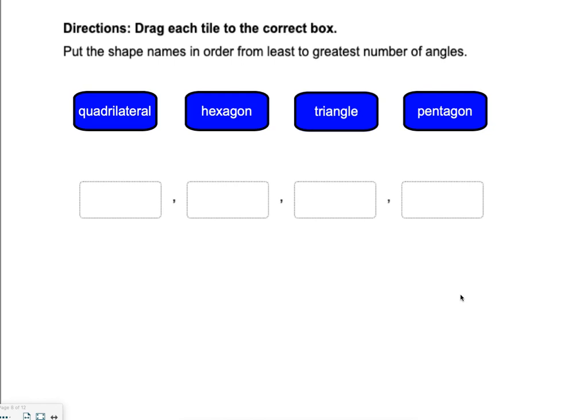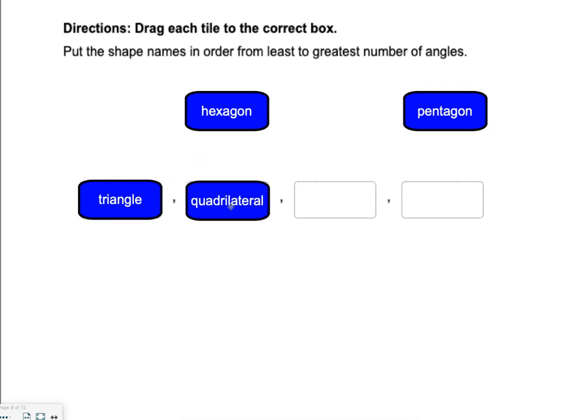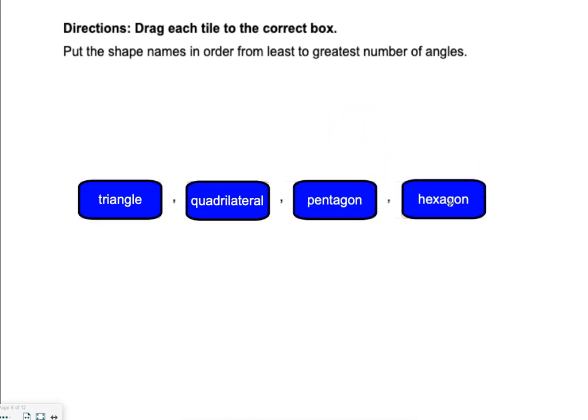Let's look at the next question. The directions say that we're going to drag each tile to the correct box. Now, you might say, well, how do I know it's correct? Read the next sentence. It says, put the shape names in order from least to greatest number of angles. So that means you're starting with the smallest one, and then you're going to the largest one. So my choices are quadrilateral, hexagon, triangle, and pentagon. Hopefully, you knew that triangle had three, so that should go first. Then you know quadrilateral has four, pentagon has five, and hexagon has six. So this is three, four, five, six, from least to greatest.